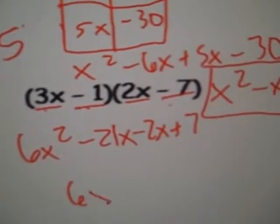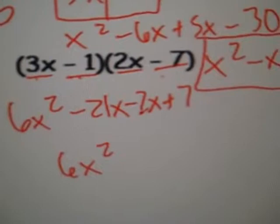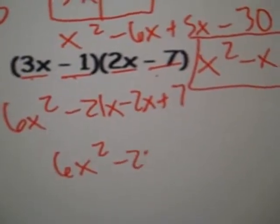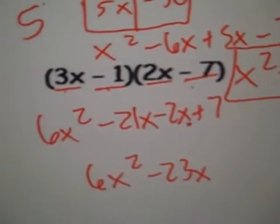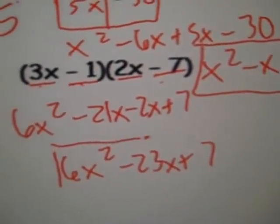Combine the like terms. 6x squared stays the same. Negative 21 and negative 2. That gives us negative 23. Don't forget the x. And then add that additional 7 at the end. Final answer.